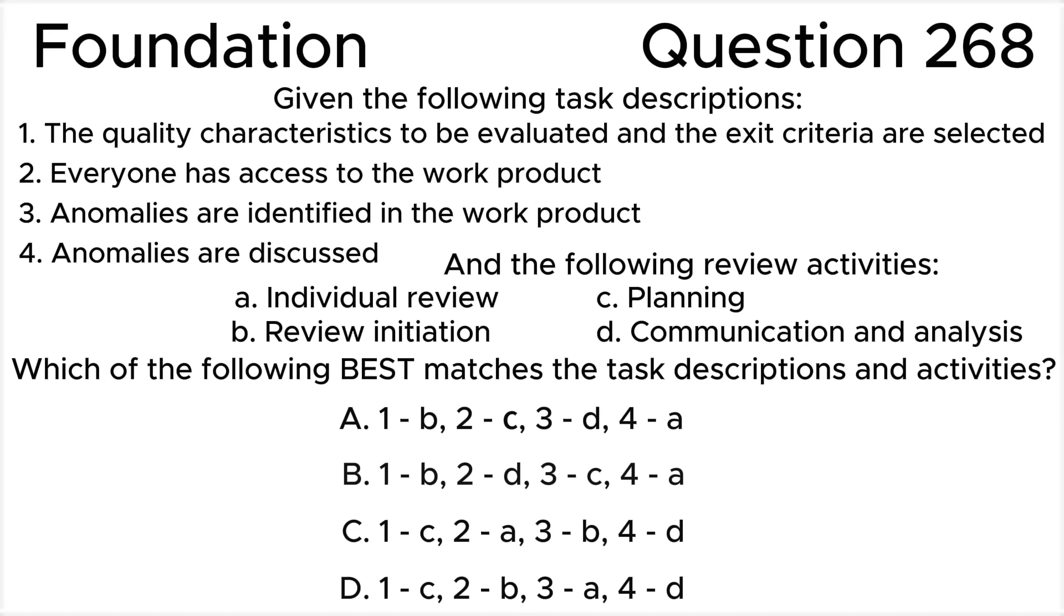ISTQB Foundation Level Question 268. Given the following task descriptions: 1. The quality characteristics to be evaluated and the exit criteria are selected. 2. Everyone has access to the work product. 3. Anomalies are identified in the work product. 4. Anomalies are discussed. And the following review activities: A. Individual review, B. Review initiation, C. Planning, D. Communication and analysis.